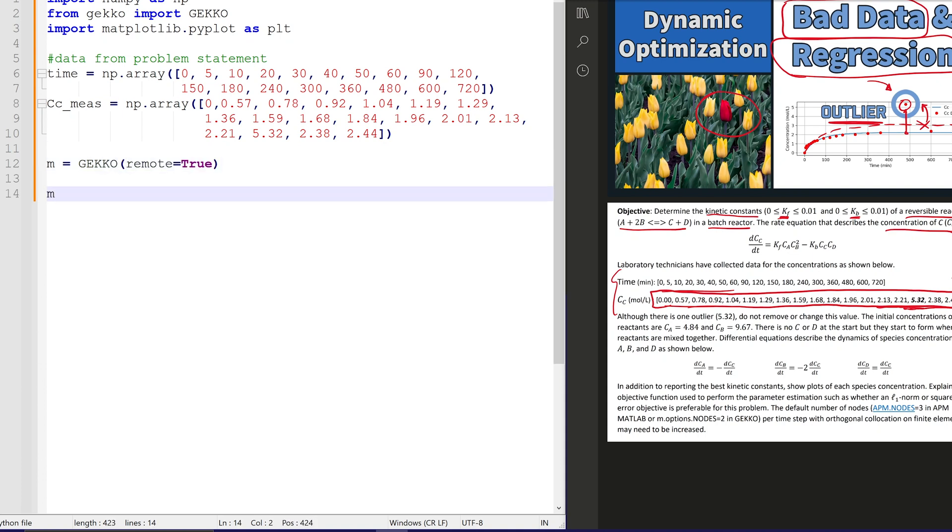We'll say remote equals true. If you don't want to solve with an internet connection, set that to false. Here we have our K forward, we'll give it an initial guess, and lower and upper bound values. And then also K backward as well.